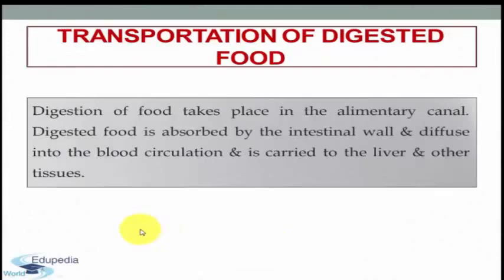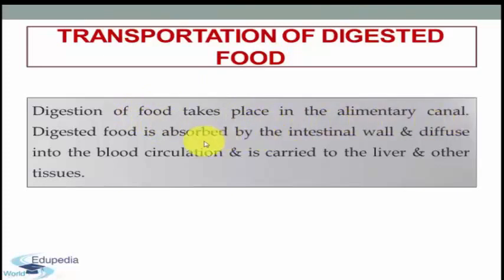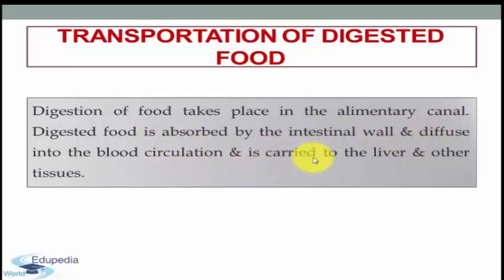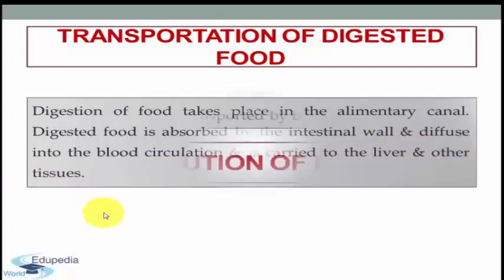The next function of blood is transportation of digested food. Digestion of food takes place in the alimentary canal. Digested food is absorbed by the intestinal wall and diffuses into the blood circulation, and is carried to the liver and other tissues. So this was another function of blood.